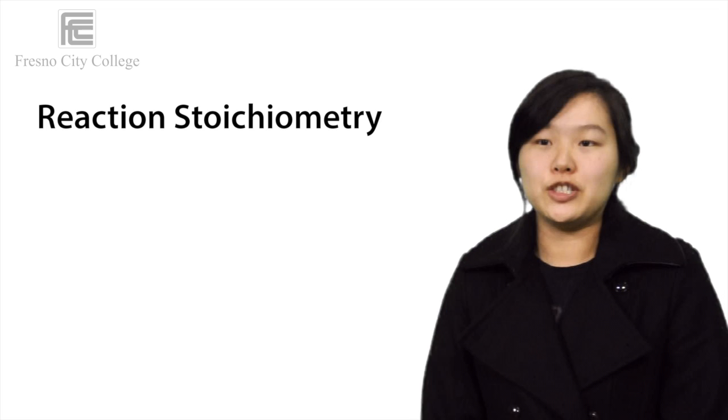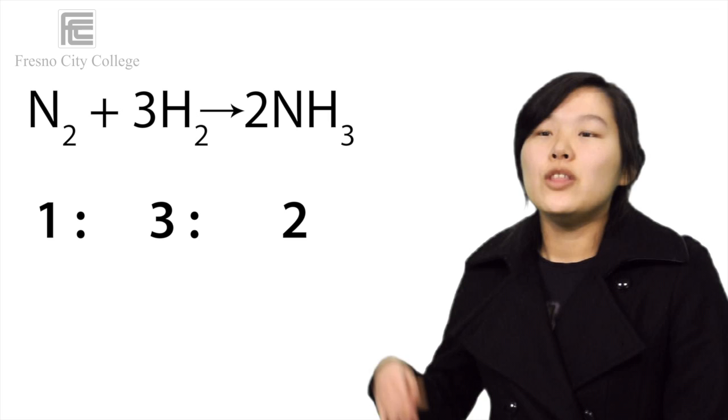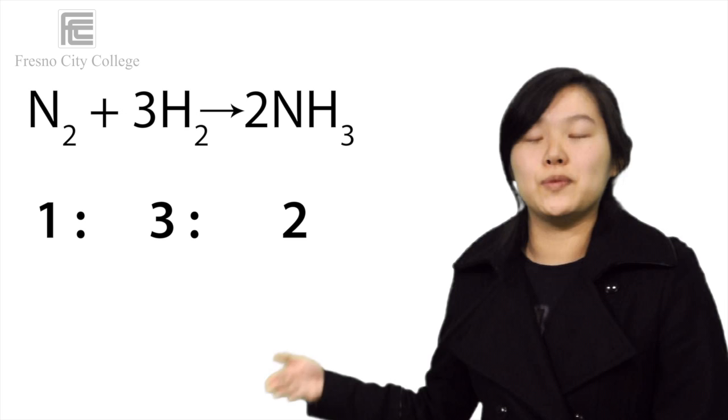In this example above, the ratio of molecules of hydrogen, nitrogen, and ammonia are 1, 2, 3 to 2, respectively.